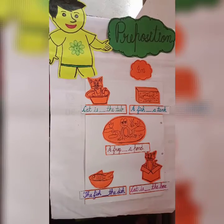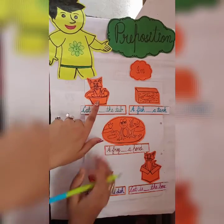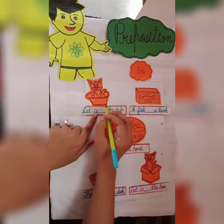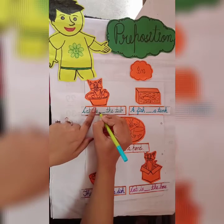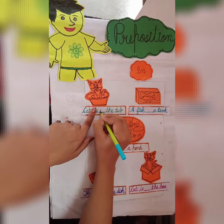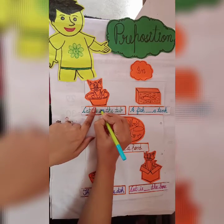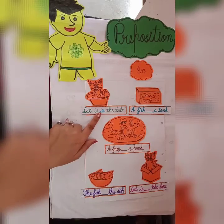Preposition in. As you can see, the first picture shows a cat in the tub, and here it is written 'cat is blank the tub.' So I will write here: in. Cat is in the tub.